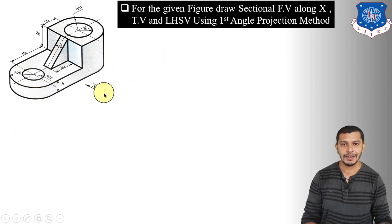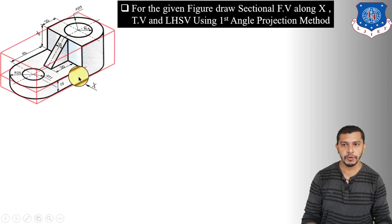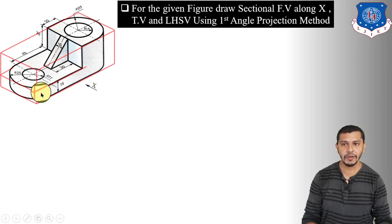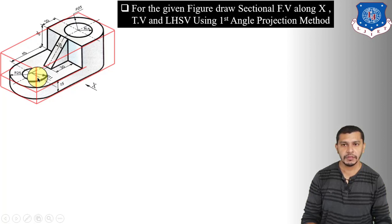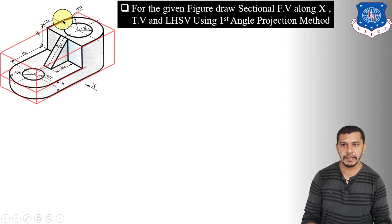The first and basic thing is we have to find out the length, width, and height of the object. For that, let us assume that the object is cast from a cuboid — shown here by the red outline. The length of the cuboid will be the length of the object, the width of the cuboid will be the width of the object, and the height of the cuboid will be the height of the object. The distance between the two edges gives us the length: starting from this edge — radius of this circle 25, plus 45, plus 20, plus 25 radius of this circle.